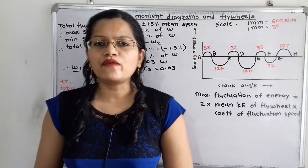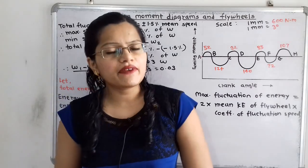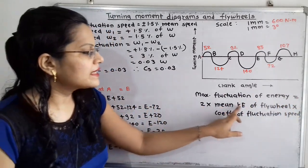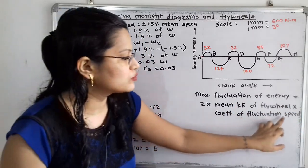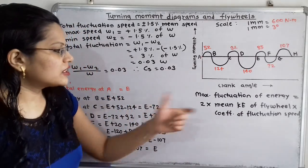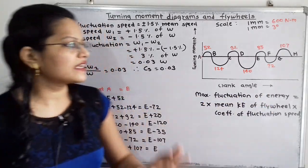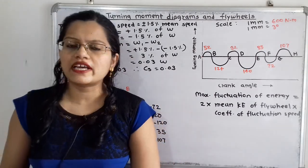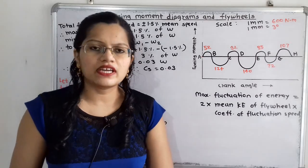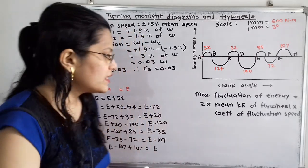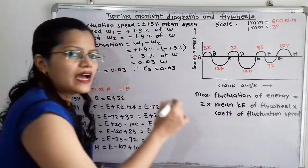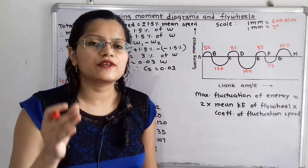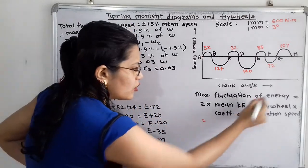We have to find the mass of the flywheel. We will use the basic formula: maximum fluctuation of energy = 2 × mean kinetic energy × coefficient of fluctuation of speed. The maximum fluctuation of energy can be calculated from the given graph. For kinetic energy, in linear motion it is ½mv², but since the flywheel is rotating, we use ½Iω², where I is the mass moment of inertia and ω is the angular velocity.